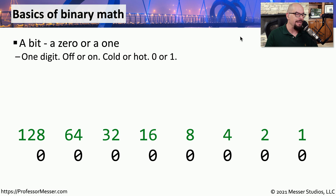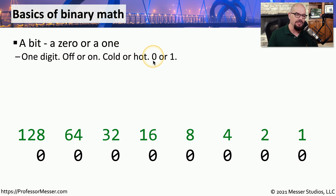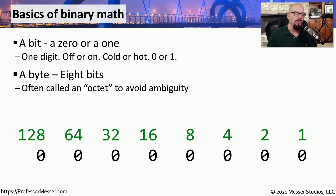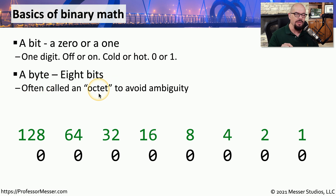Binary means a single bit that can either be 0 or 1. It's either on or off, and we usually represent this as a 0 for off and a 1 for on. When we put eight of these bits together, we have what's called a byte. We often refer to this byte as an octet to show that it is eight bits being used in this calculation.